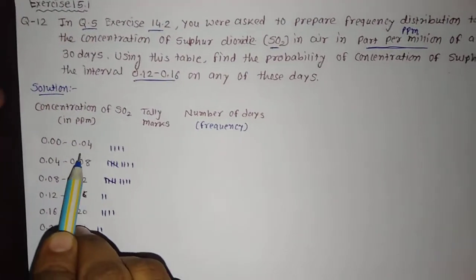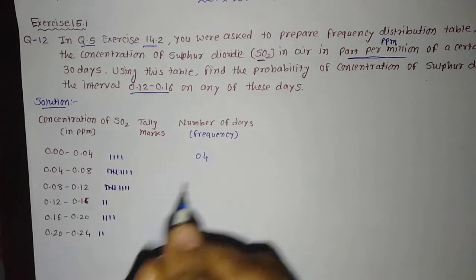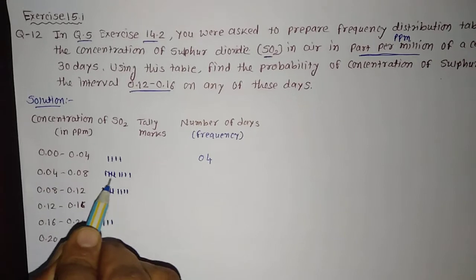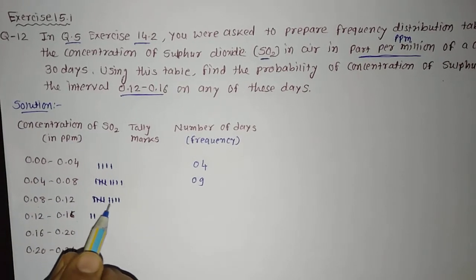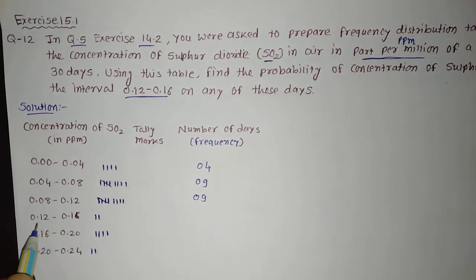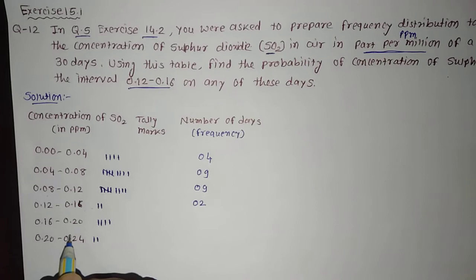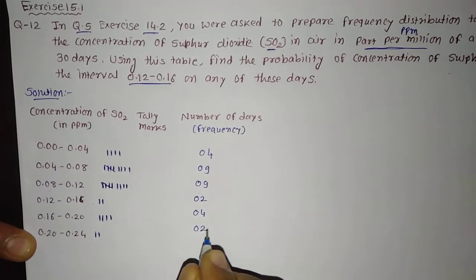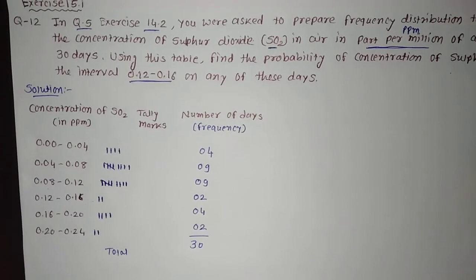Now we calculate the tally marks and keep the frequency for each group. For 0.00 to 0.04 the frequency is 4. For 0.04 to 0.08 it is 5 plus 4 equals 9. For 0.08 to 0.12 it is also 9. For 0.12 to 0.16 it is 2. For 0.16 to 0.20 it is 4. For 0.20 to 0.24 it is 2. Total: 4 plus 9 plus 9 plus 2 plus 4 plus 2 equals 30. This confirms our frequency distribution is correct.